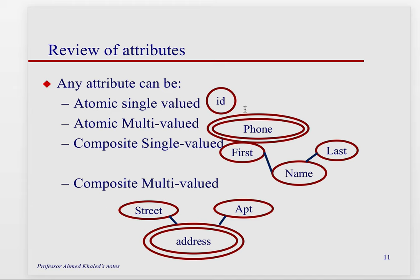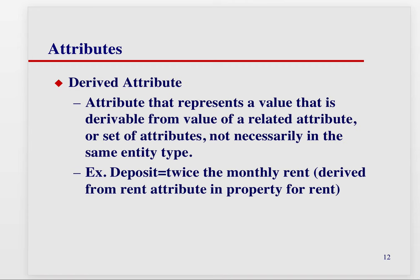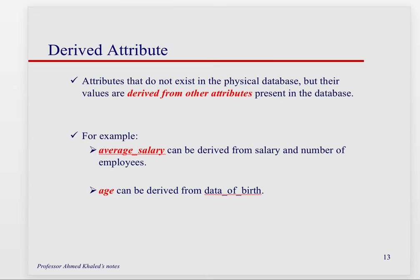So we have single-valued, multi-valued, composite, and now something called a derived attribute. Most attributes are not derived — they just have a direct value. But sometimes you have a value that's derived from something else. For example, deposit might be twice the monthly rent. Average salary is derived from salary and the number of employees. Age is also derived from date of birth.